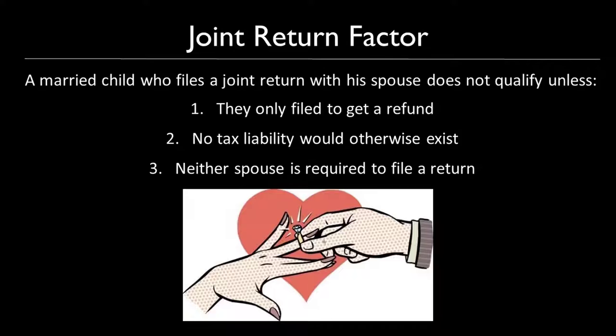The joint return test only applies if you have a married child living with you who hasn't left the nest. A married child who files a joint return with his or her spouse does not qualify as a qualifying child, unless they only filed a return to get a refund from withholding, no tax liability would otherwise exist if filing married filing separately, and neither spouse is required to file a return. If any of these do apply, you are disqualified as a qualifying child, but you may be able to qualify as a qualifying relative.